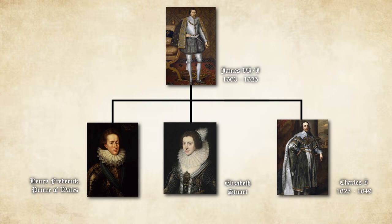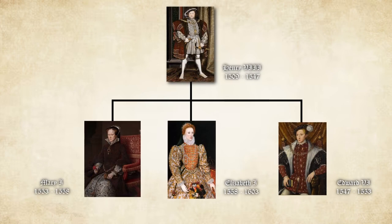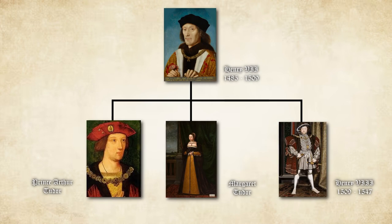James VI of Scotland became king of Scotland by birthright, but became king of England because of the lack of succession in the Tudor dynasty. The previous monarch before James was Elizabeth I, who reigned from 1558 until 1603 and had no children. She inherited the throne from her elder sister Mary I, who reigned from 1553 until 1558. Mary I inherited the throne from her younger brother Edward VI, who reigned from 1547 until 1553, and Edward inherited his claim from his father Henry VIII, who reigned from 1509 until 1547. Henry VIII was the eldest surviving son of his father Henry VII. He did have an elder brother Arthur who unfortunately passed away.